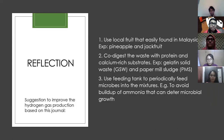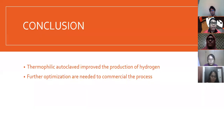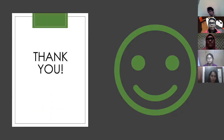Suggestions to improve hydrogen gas production include: using local fruit that is easily found in Malaysia; co-digesting the waste with protein and calcium-rich substrates such as gelatinous solid waste and sewage sludge; and using a feeding tank to practically feed the microbes into the mixture. In conclusion, thermophilic autoclaving improves hydrogen production, and further optimization is needed to commercialize the process. That's all from us. Thank you.